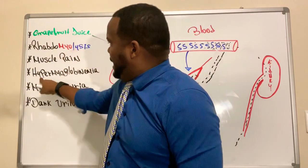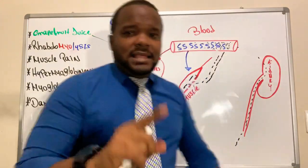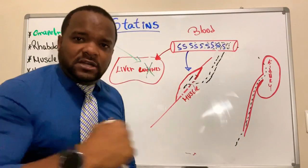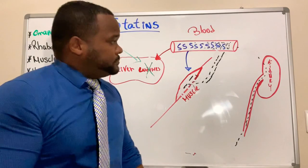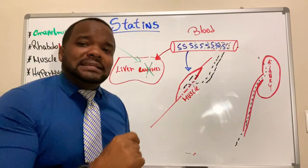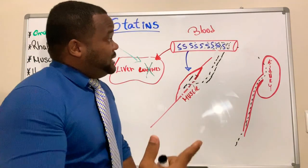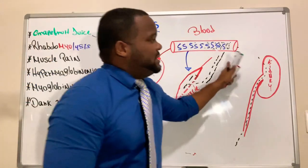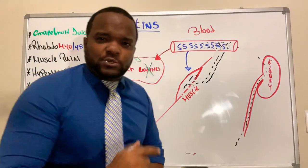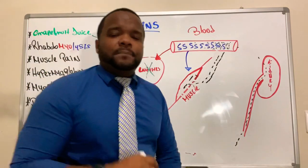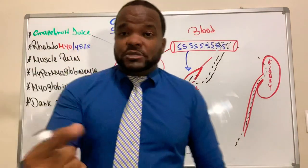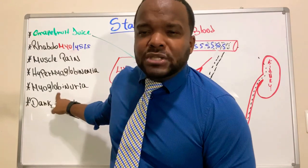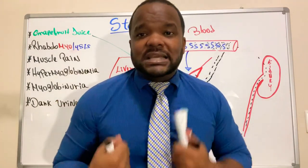With hypermyoglobinemia, the kidney is going to try to remove the excess myoglobin from the blood. That myoglobin, which is excessively increasing in the blood, will be eliminated through the kidneys — and that's why the patient will now have myoglobinuria, meaning myoglobin is present in the urine.